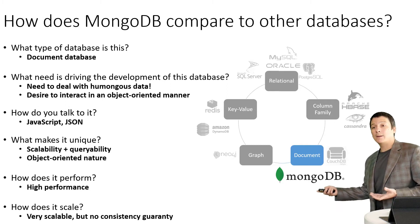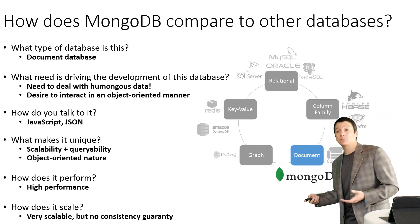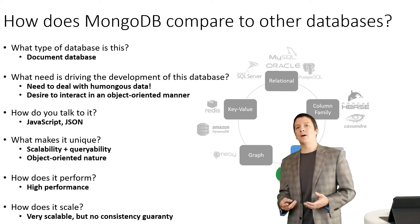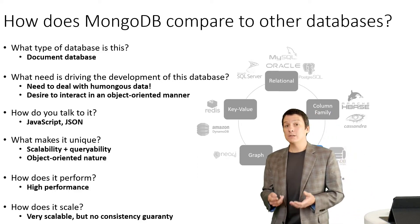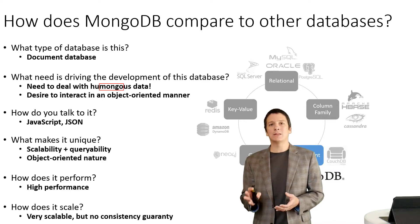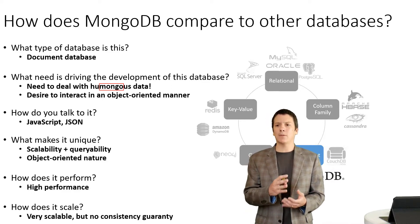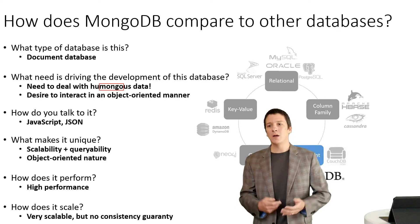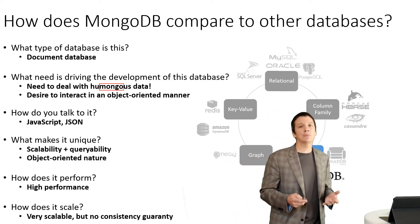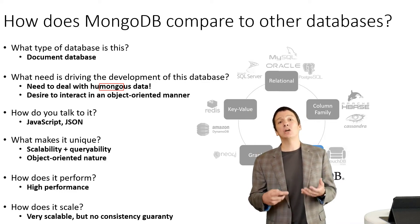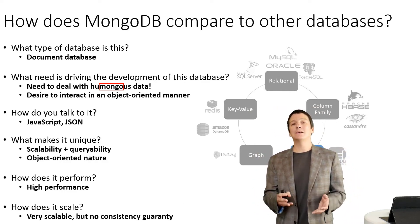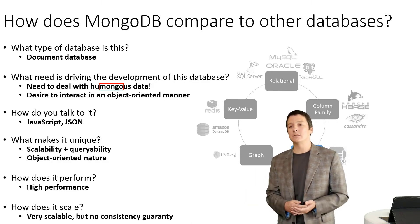What type of database is MongoDB? It's a document database, and the need that was driving the development of MongoDB was the need to interact with humongous data. In fact, this is where the name MongoDB comes from — it's derived from the word humongous. Developers also had a desire to be able to interact with data in an object-oriented manner, and we're going to be talking more about what exactly that means throughout this series of lectures.